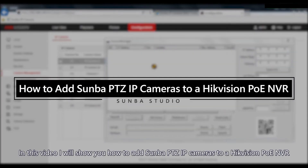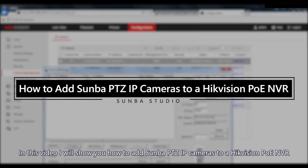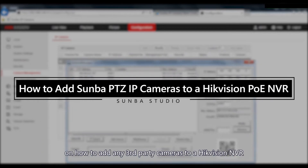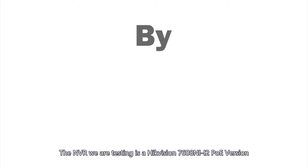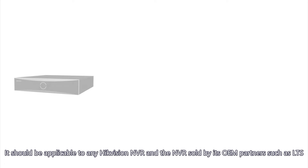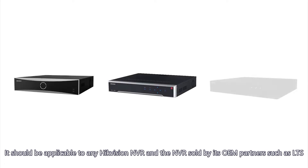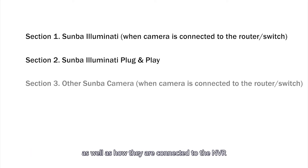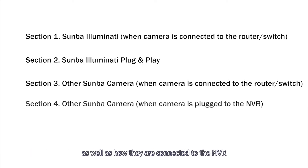In this video, I'll show you how to add Samba PTZ IP cameras to a Hikvision PoE NVR, and I hope this video will provide insights to other users on how to add any third-party cameras to a Hikvision NVR. The NVR we are testing is a Hikvision 7608Ni-i2 PoE version, applicable to any Hikvision NVR and NVRs served by OEM partners such as LTS. The video contains 4 sections based on different camera models and how they are connected to the NVR. You can navigate to the specific part based on your needs.